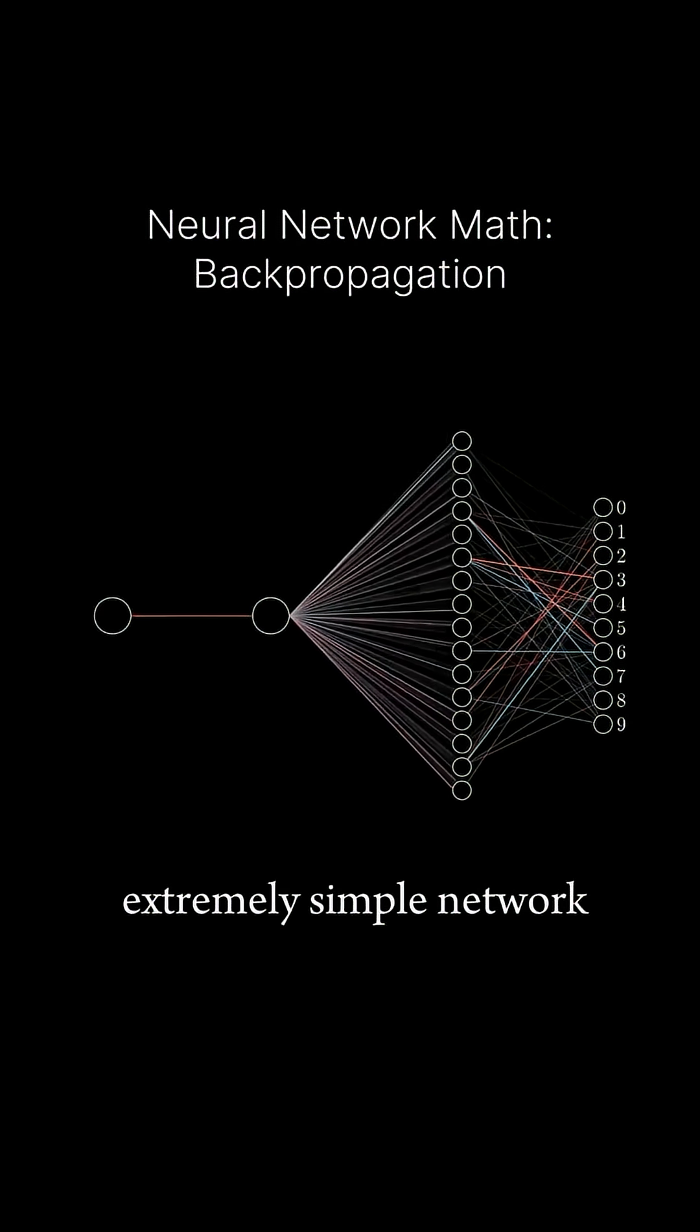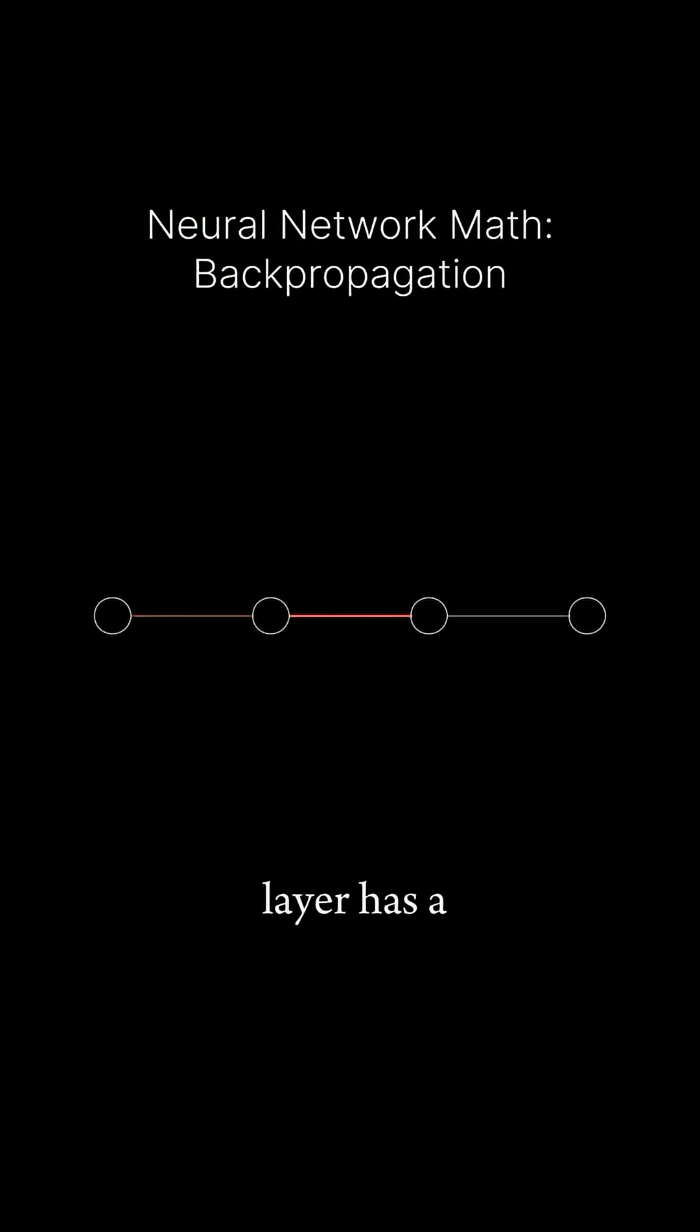Let's just start off with an extremely simple network, one where each layer has a single neuron in it. So this particular network is determined by three weights and three biases, and our goal is to understand how sensitive the cost function is to these variables.